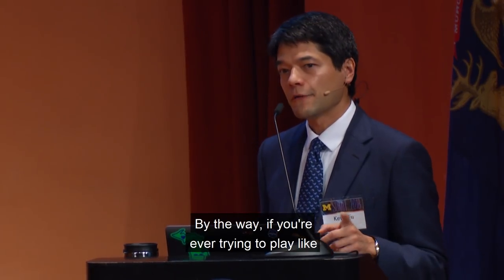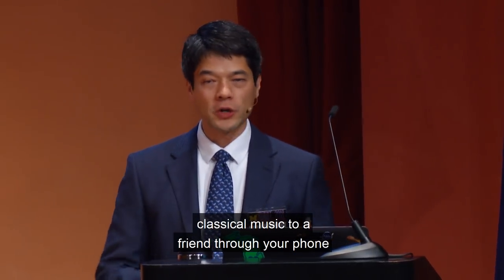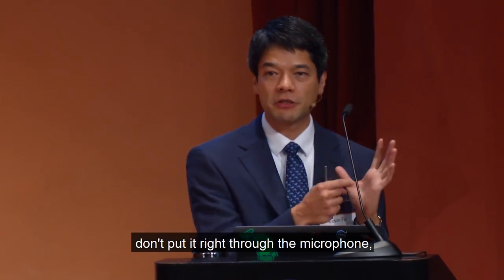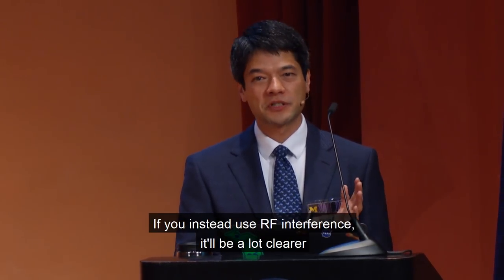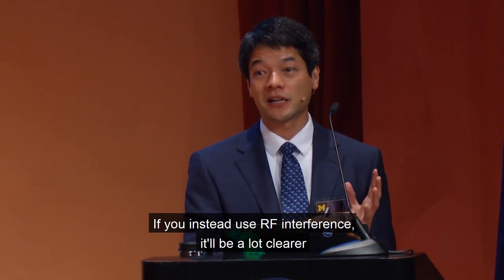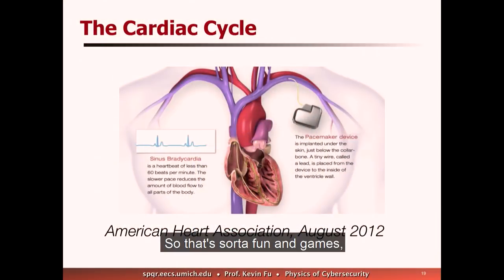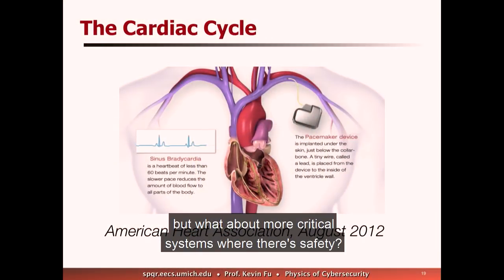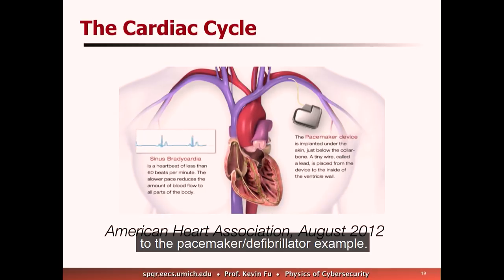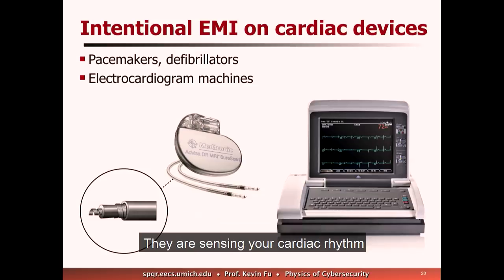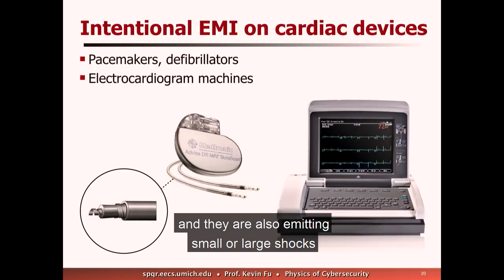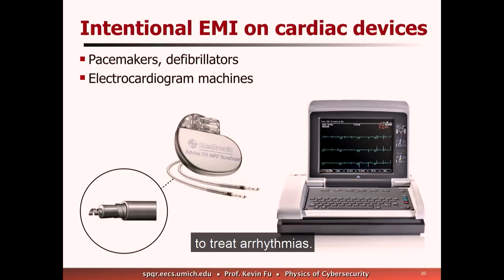By the way, if you're ever trying to play classical music to a friend through your phone and you're in an airport — don't put it right through the microphone because microphones tend to be kind of cheap and crappy. If you instead use RF interference, it'll be a lot clearer on the receiver side. But what about more critical systems where there's safety? Let's go back to the pacemaker-defibrillator example.